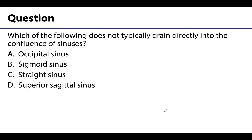To finish off, here is a review question: which of the following does not typically drain directly into the confluence of sinuses? A) the occipital sinus, B) the sigmoid sinus, C) the straight sinus, or D) the superior sagittal sinus? The correct answer is B, the sigmoid sinus. The other three do actually drain directly into the confluence of sinuses, whereas the sigmoid sinus is distal to the confluence. Please take time to review these concepts, and I look forward to discussing them if you have questions. Thank you for your time and attention.